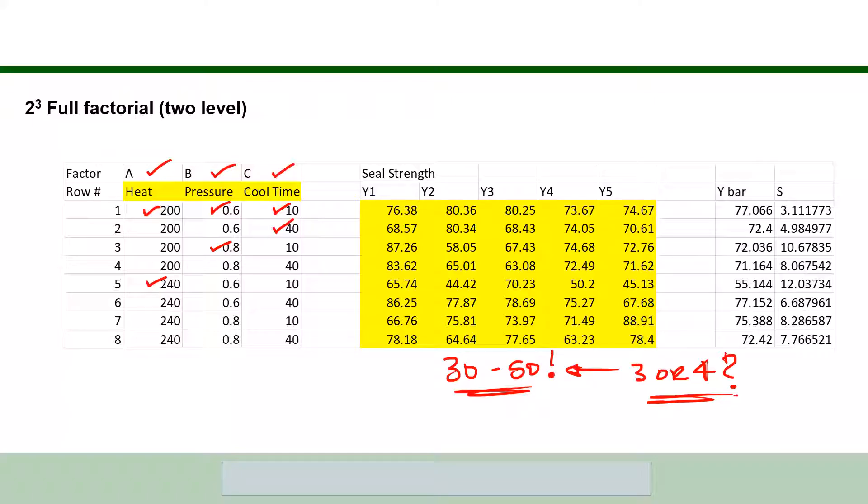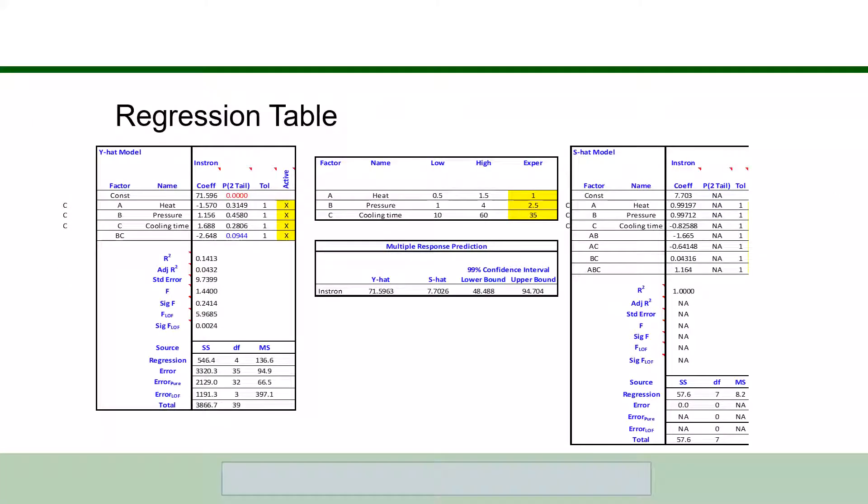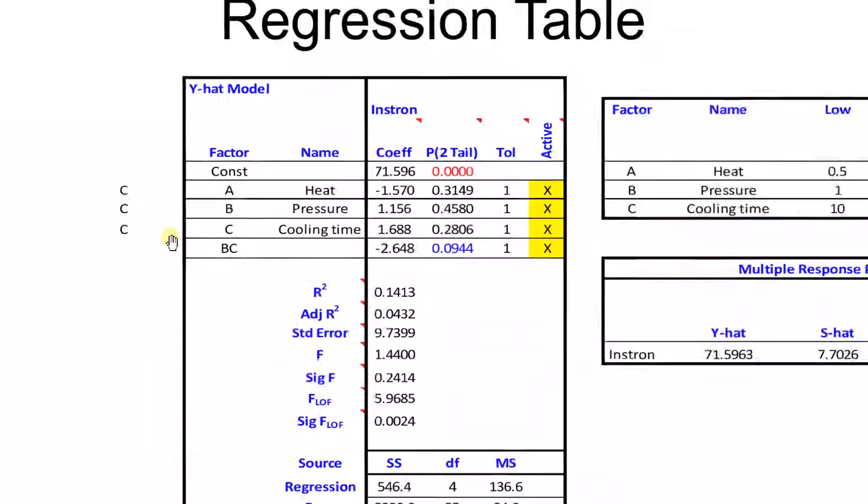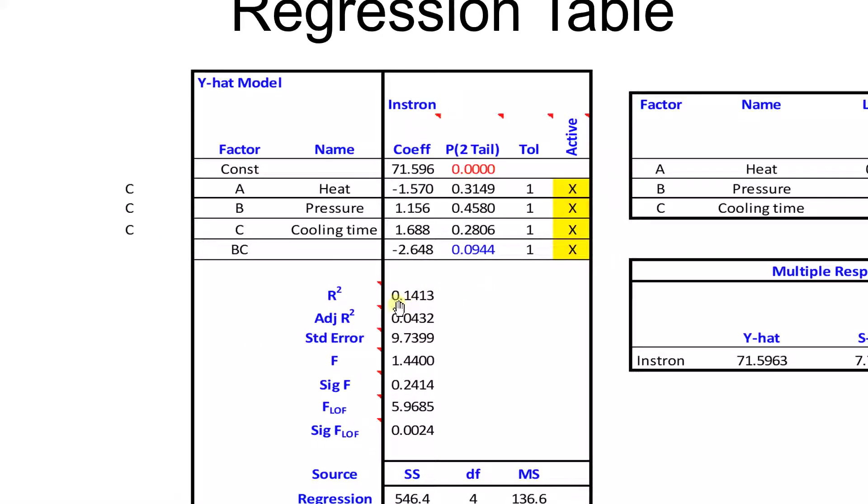These are the three variables that they decided with their skill were the most important variables to make this sealing process work properly. They did the experiment and then they did the analysis. Let me show you - I'm going to blow this up so we can see a little bit better. This is the regression table. First thing to look at - look, the R-squared is 0.14 here.